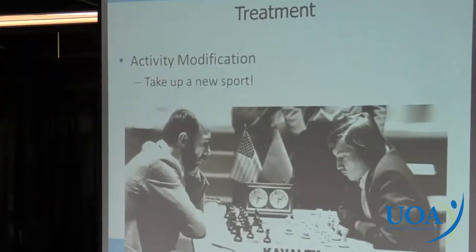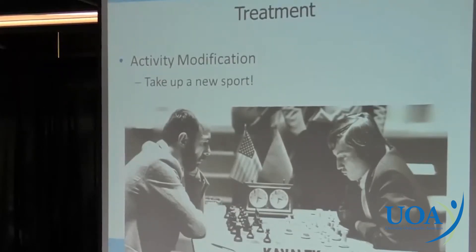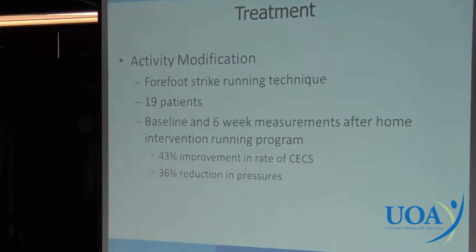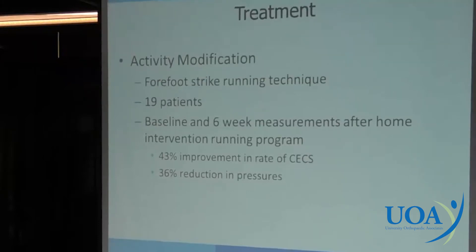For treatment, you can take up a new sport — but we don't want people to give up running. So we do activity modification: decrease their training regimen and try to avoid the exercise that causes the exertional compartment syndrome. One study looked at teaching people to run with a forefoot-strike technique in 19 patients, and at six weeks they saw a 43% improvement in symptoms and a 36% reduction in pressures, which is pretty impressive.